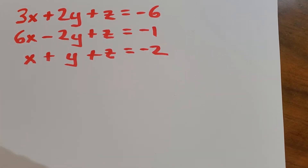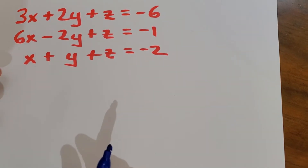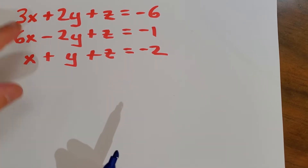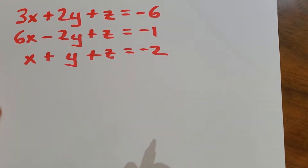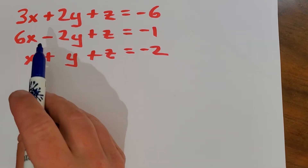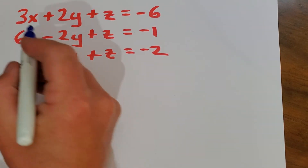Alright my friends, we're going to learn a little algorithm for solving three equations for three unknowns. So you have three independent equations for three variables, x, y, and z. And so a little algorithm goes like this.